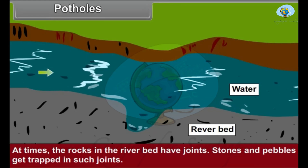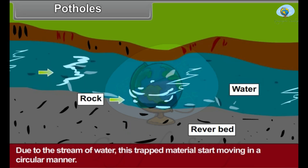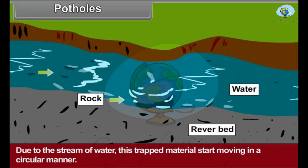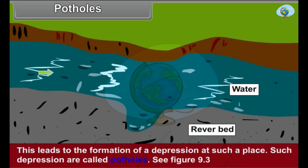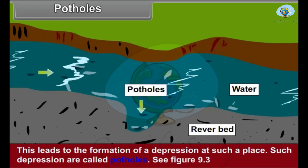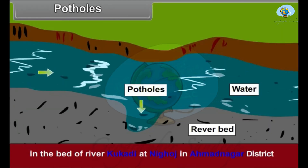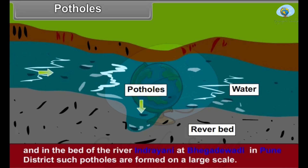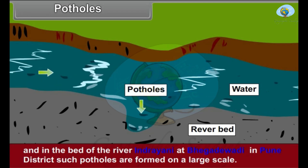Potholes: At times the rocks in the river bed have joints. Stones and pebbles get trapped in such joints due to the stream of water. This trapped material starts moving in a circular manner, leading to the formation of depressions at such places. Such depressions are called potholes. In the bed of river Kukdi at Nigoj in Ahmadnagar district and in the bed of river Indrayani at Bhigadwadi in Pune district, such potholes are formed on a large scale.